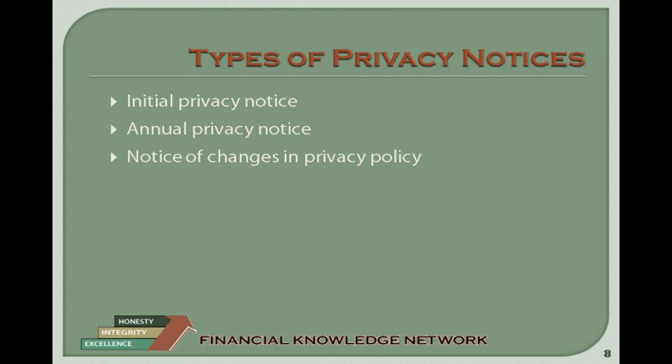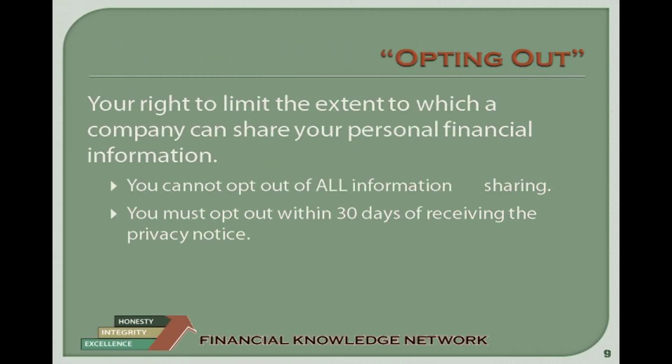There are several types of notices you may receive: one, an initial notice when you first open an account; two, an annual notice which would include any changes; three, notice of changes in the privacy policy. In some cases, you have the right to opt-out of certain information sharing and participation. Typically, these opt-in or opt-out opportunities require you to act within a certain number of days, so make sure you are reading the privacy notices carefully when you get them, as they will explain the rules and the deadlines. This is very valuable information to understand and will alleviate headaches down the road.